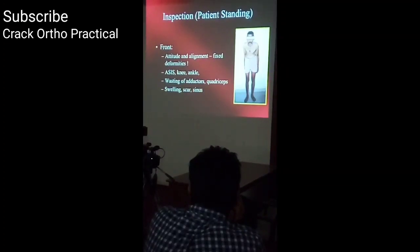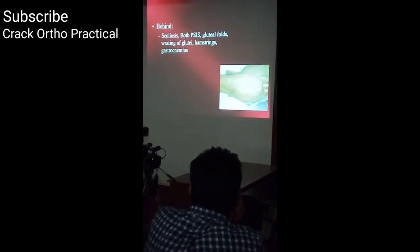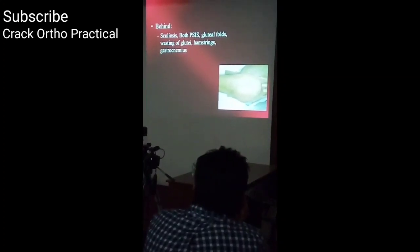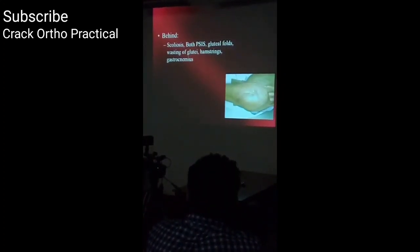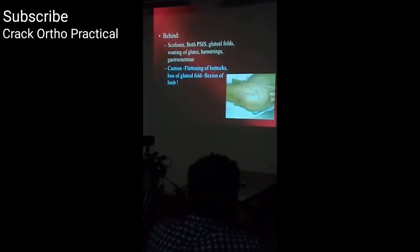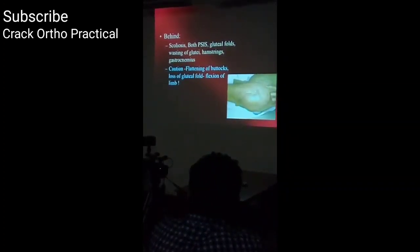Also look for swelling, scars, and sinuses. From behind, check for scoliosis, lateral curvature of the spine, posterior superior iliac spine levels, gluteal folds, and wasting of the gluteal muscles, hamstrings, and gastrocnemius. A word of caution: flattening of the buttocks may appear to be wasting, but if there is a flexion deformity there will be obliteration of the gluteal fold, not true wasting.